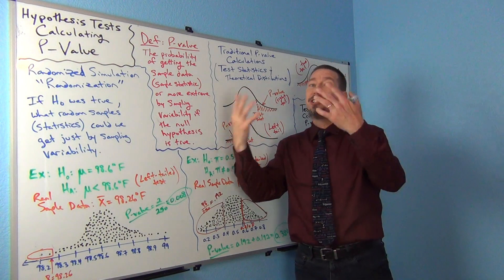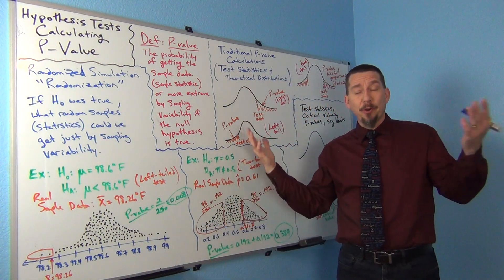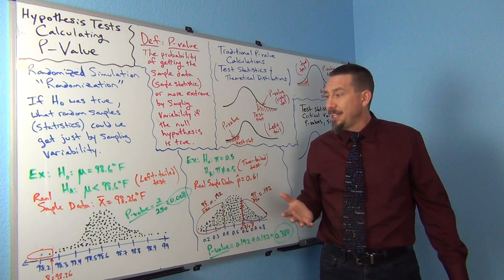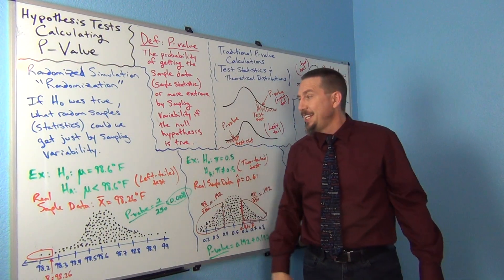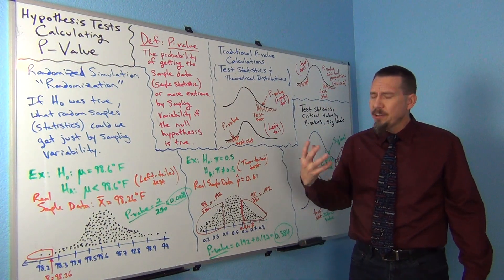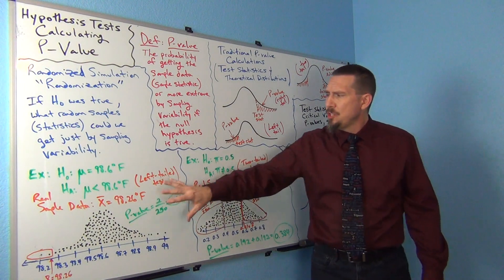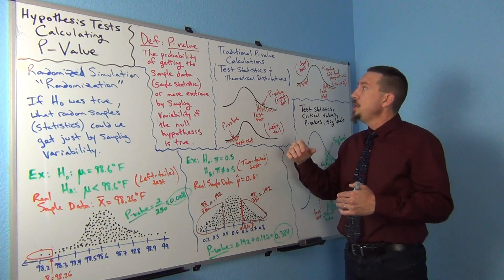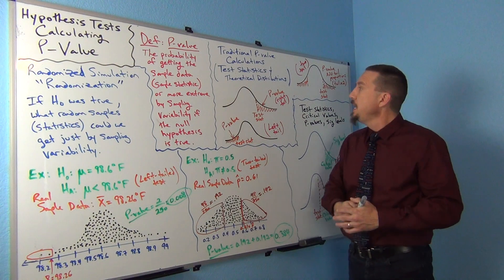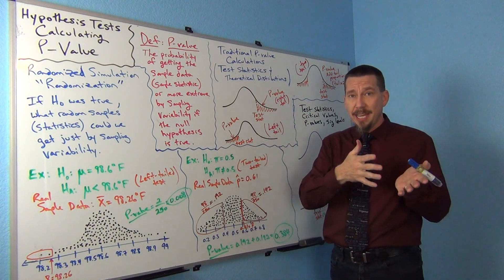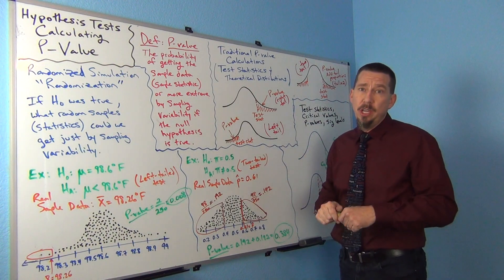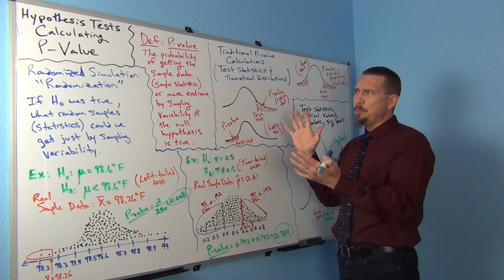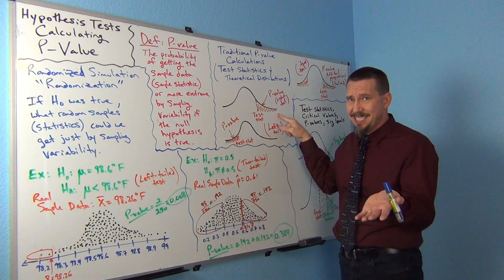Now, what about the traditional approach? Before computers were invented, statisticians didn't have the capability of doing this — they couldn't just make 5,000 random samples at the drop of a hat. So they had to figure out a way of approximating this. The way they did it is they used the actual test statistic instead. You would calculate your test statistic and then use a theoretical distribution that corresponds to that test statistic to calculate your p-value — your approximate p-value based on the probability in the tail corresponding to the test statistic itself.